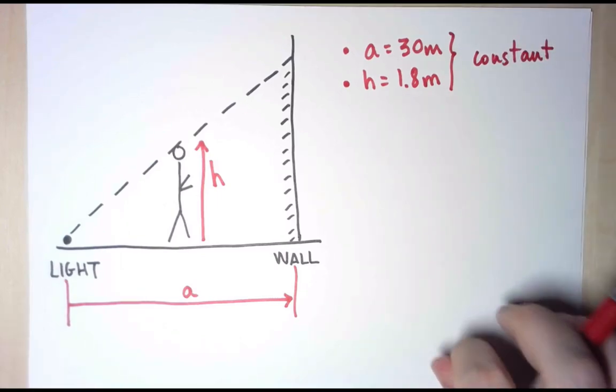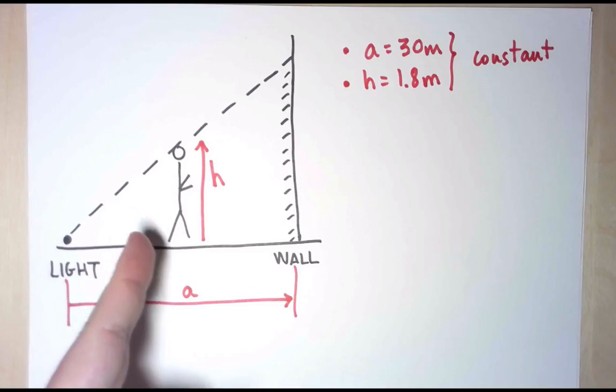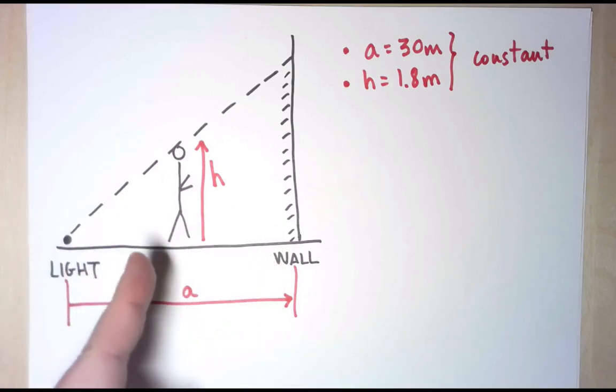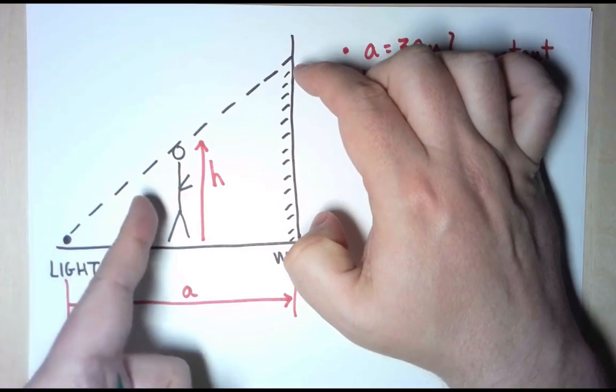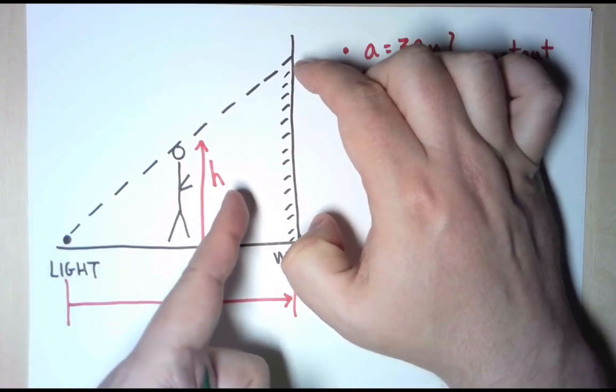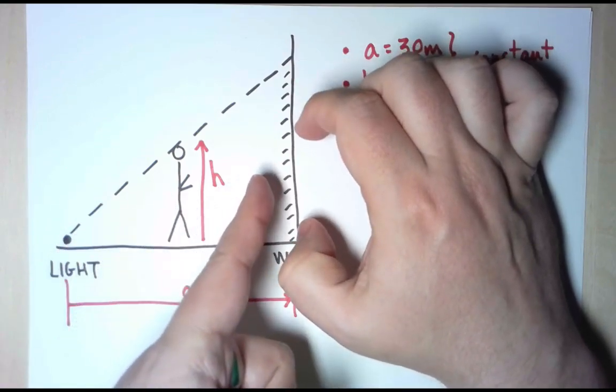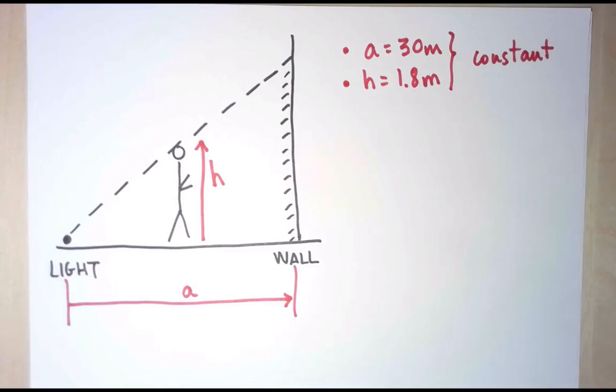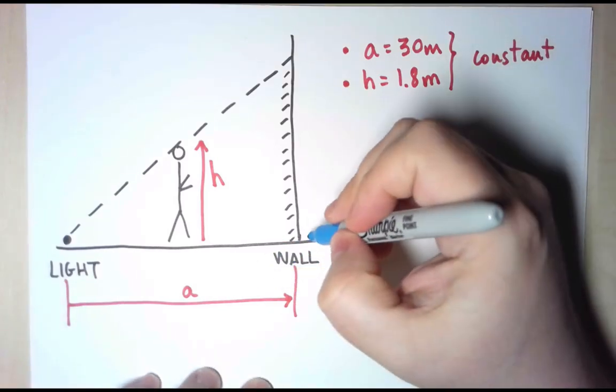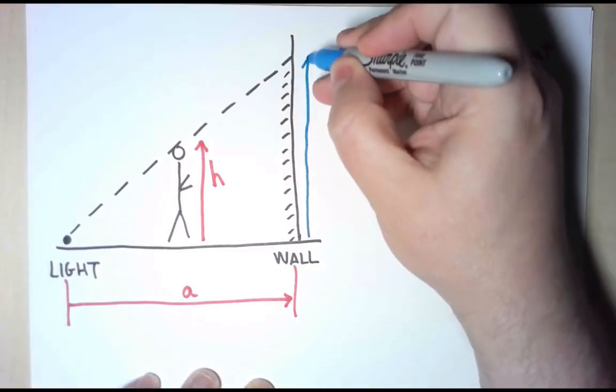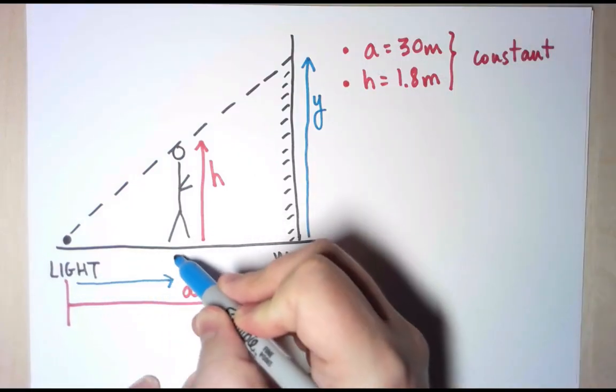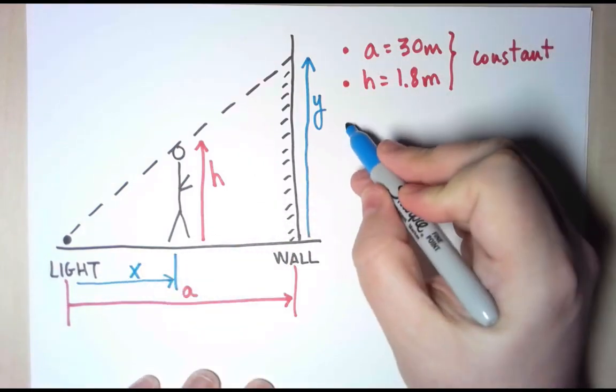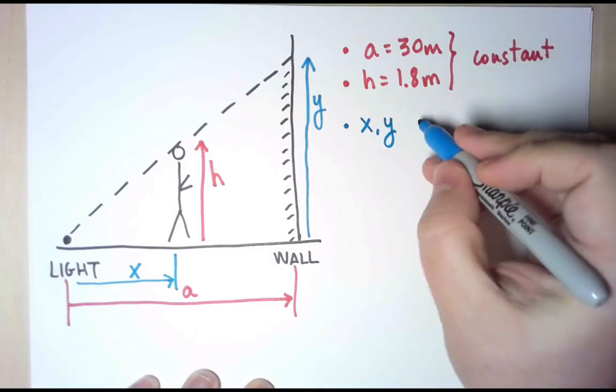But I do have a few other quantities that depend on time. As the prisoner is running, the position of the prisoner is going to change, and the height of the shadow is going to change as well. In fact, if the prisoner gets closer to the wall, I expect the height of the shadow to decrease. So let's give names to these two things. I'm going to call the height of the shadow Y, and I'm going to call the position of the prisoner X. And what I know is that X and Y depend on time.